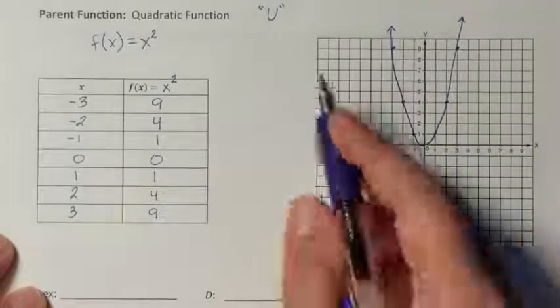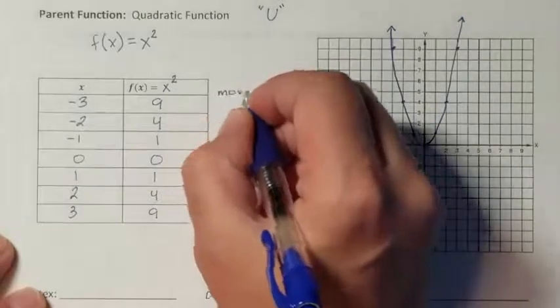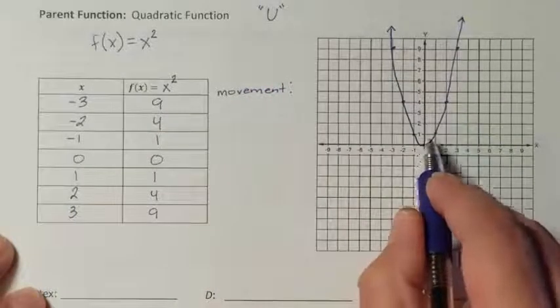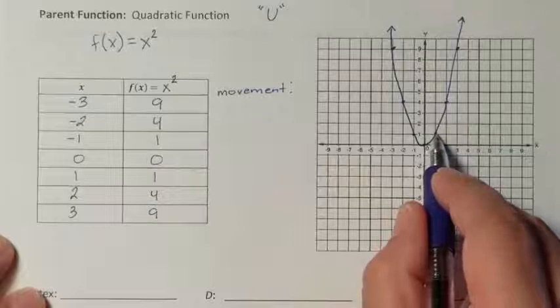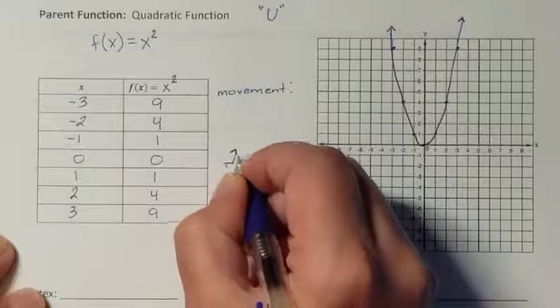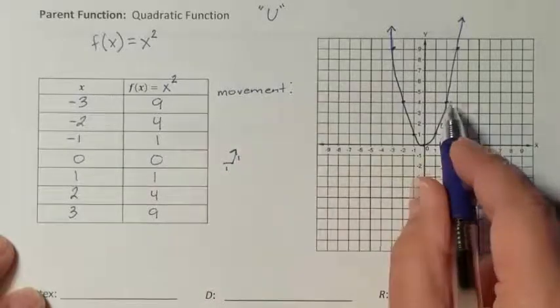Now we need to look at this real fast. There is a particular movement that you need to be aware of when looking at this. When I went from this point to this point, I saw that I went over 1, up 1. From here to the next point, I went over 1, up 3.